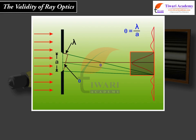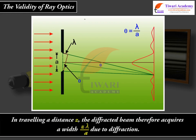This is the angular size of the bright central maximum. In travelling a distance z, the diffracted beam therefore acquires a width z lambda upon A due to diffraction.